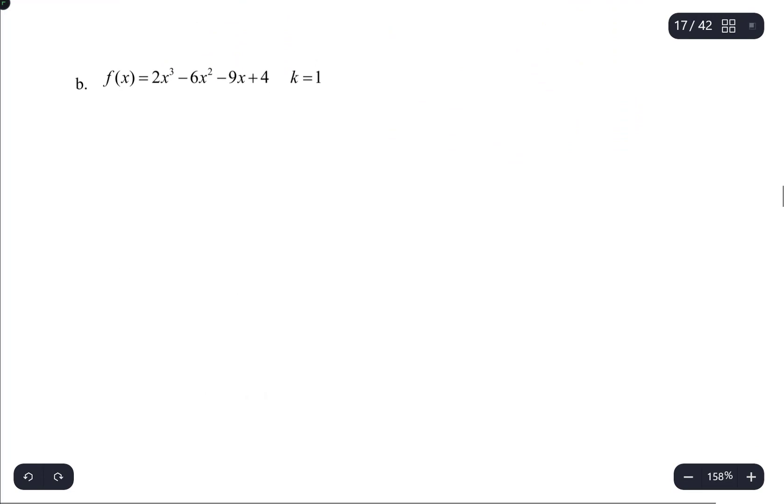Let's try the next one. f(x) equals 2x cubed minus 6x squared minus 9x plus 4 at k equals 1.